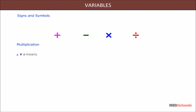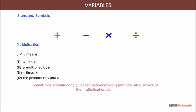Multiplication of a and b means a into b, a is multiplied by b, a times b, the product of a and b. Sometimes a small dot placed between two quantities also serves as the multiplication sign.